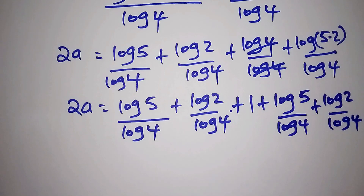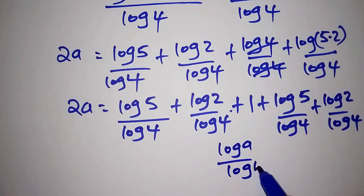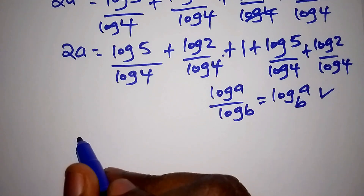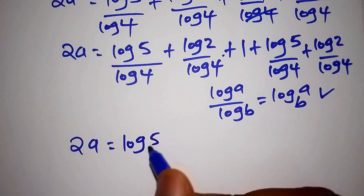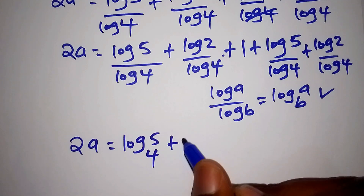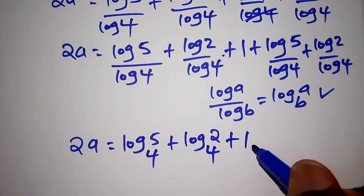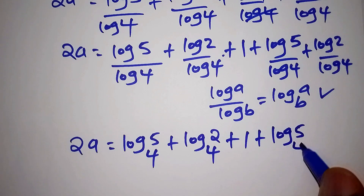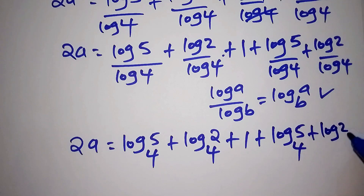When you have log of A all over log of B, this can be written as log of A to the base of B. So our answer now shall be 2A is equals to log of 5 to the base of 4, plus log of 2 to the base of 4, plus 1, plus log of 5 to the base of 4, plus log of 2 to the base of 4.